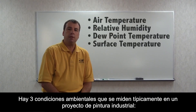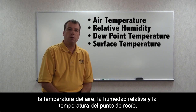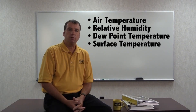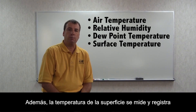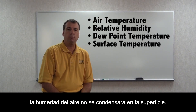There are three ambient conditions that are typically measured on an industrial painting project: the air temperature, the relative humidity, and the dew point temperature. Additionally, the surface temperature is measured and recorded, then compared to the dew point temperature to verify that moisture in the air will not condense on the surface.